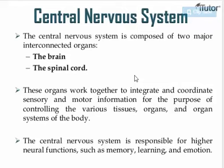The peripheral nervous system includes all the nerves, all the neurons, and all the receptors that are present all around your body. It connects all parts of the body to the central nervous system and uses these specialized structures called nerves in order to process and deal with different types of information.